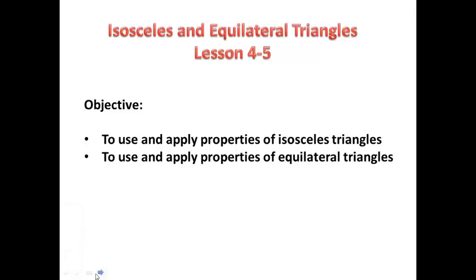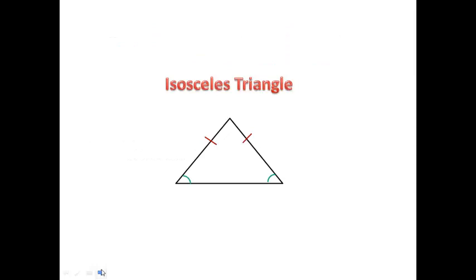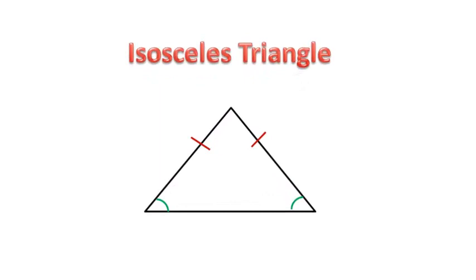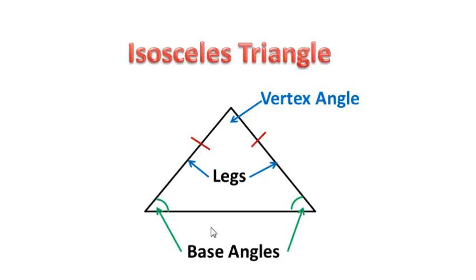We're going to start with an isosceles triangle. And we need to first cover a little bit of vocabulary. An isosceles triangle is a triangle that has at least two congruent sides. The angle up here is called the vertex angle. These sides here that are congruent are specifically called the legs. And these angles down here are called the base angles of an isosceles triangle.